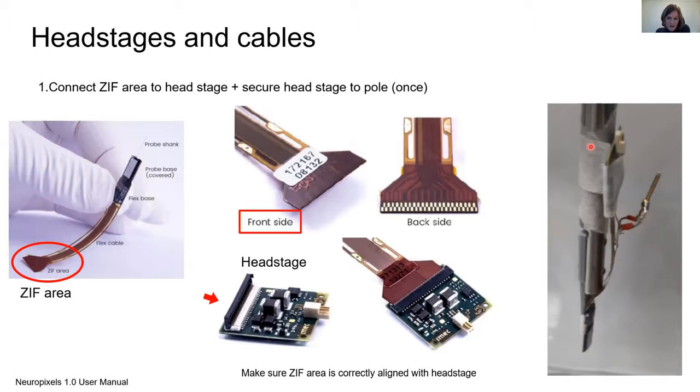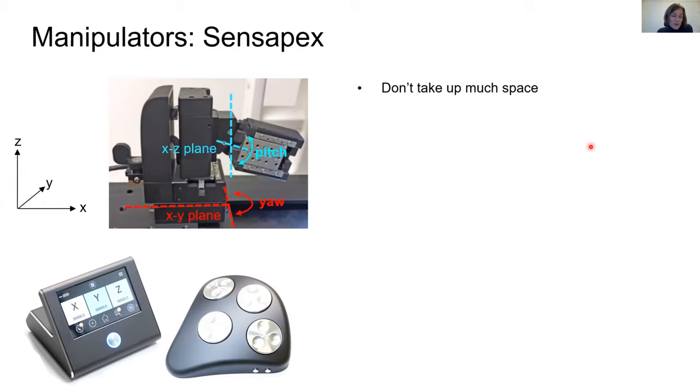Now we have our probe securely on the rod with the head stage. We want to put our probe into a manipulator so that you can micro manipulate the probe into the brain. What I used are manipulators by Sensapex. The advantages are that they do not take up that much space, so the footprint is quite small. They have four axes of movement: x, y, z and along the probe, which is important when you insert the probe into the brain. The movement range of each axis is 20 millimeters.